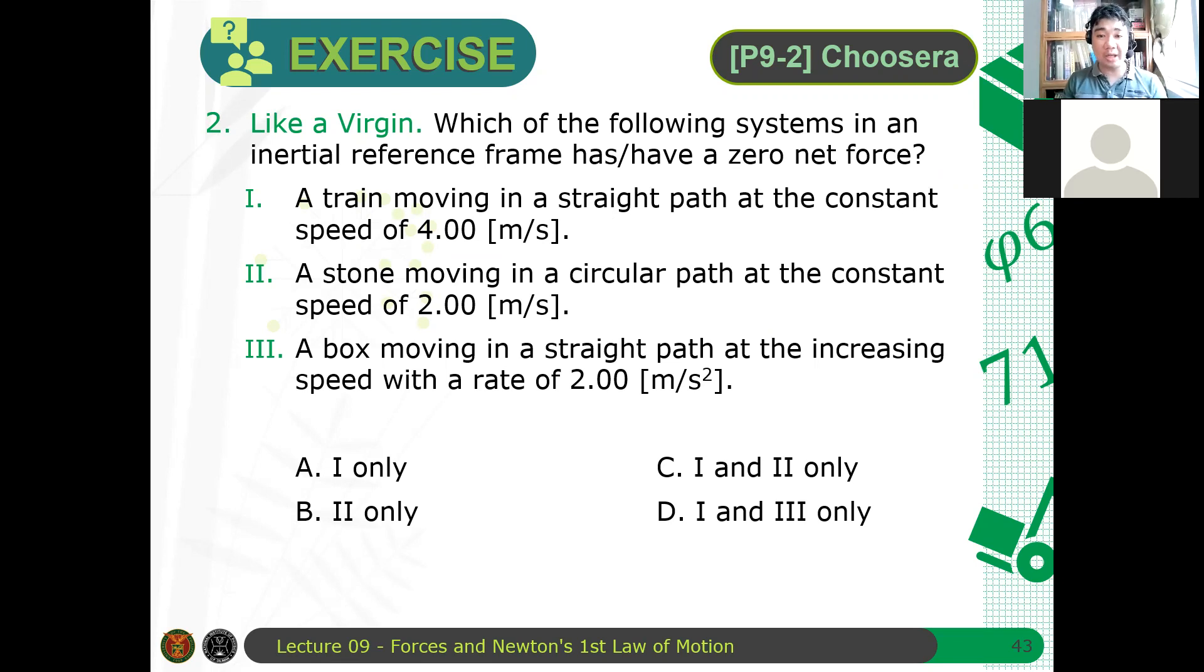a box moving in a straight path at the increasing speed with a rate of 2 meters per second squared. Which among the following is an inertial reference frame that has or have a zero net force? Is it one only, two only, one and two only, or one and three? Okay, please check.